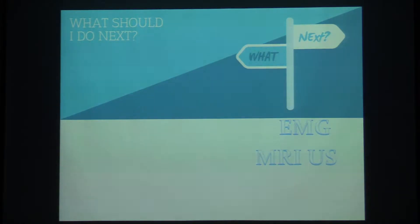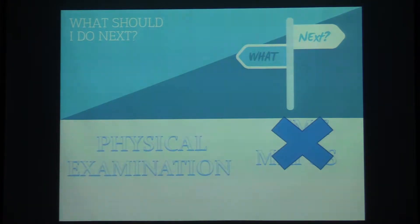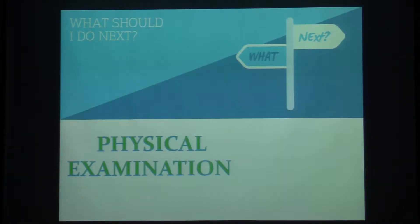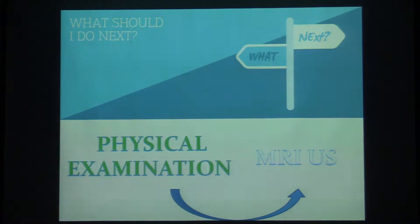We have these options, but it's a tricky question, because the next step should be physical examination — it's very important. On physical examination, we have a small, palpable, non-tender mass in the area of the left cubital tunnel. So now we can focus on the cubital tunnel and proceed to imaging. We can choose ultrasound — it's a good imaging modality, allows dynamic assessment, and it's low-cost and readily available.